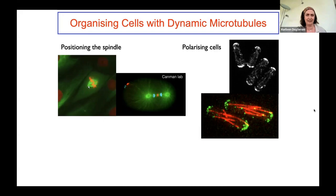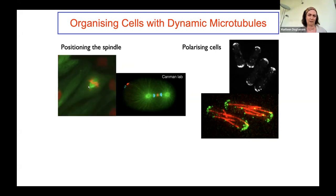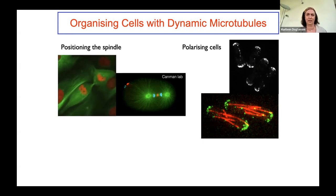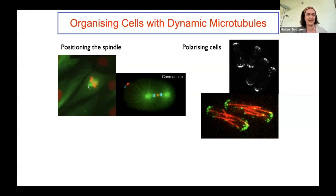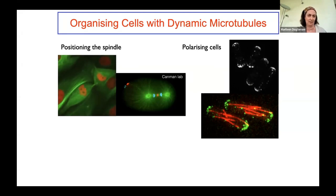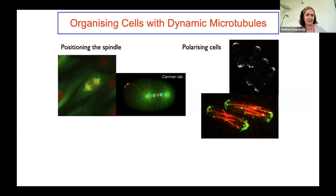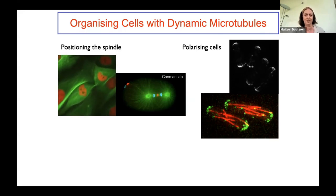I want to take a step back and describe what we've actually been doing in recent years in my own group. We've had a long interest in the cytoskeleton — not so much focused on bacteria, but on eukaryotic cells, where our focus has been on the microtubule cytoskeleton, which has a big role in the spatial-temporal organization of cells. The classic example is the spindle built from dynamic force-generating microtubules, which are capable of dividing chromosomes precisely during cell division.